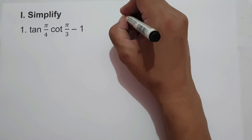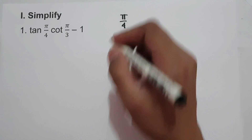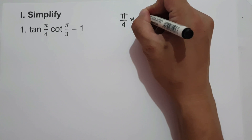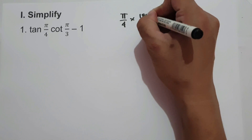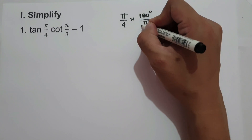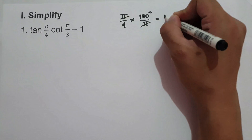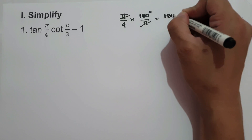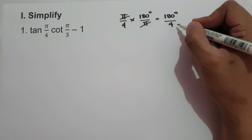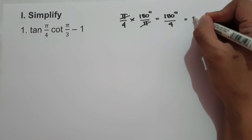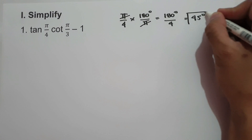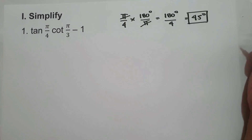So we're going to have pi over 4 times 180 degrees over pi. Let us cancel pi, and we have 180 degrees over 4. 180 divided by 4 is 45 degrees. So this will be the value of pi over 4.